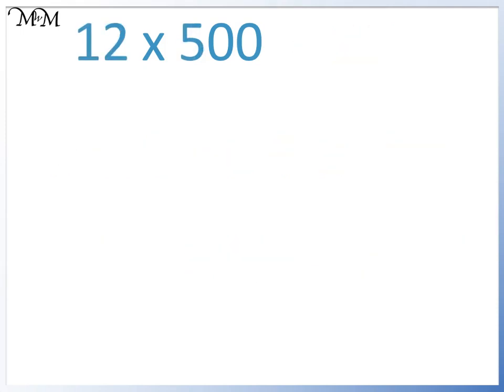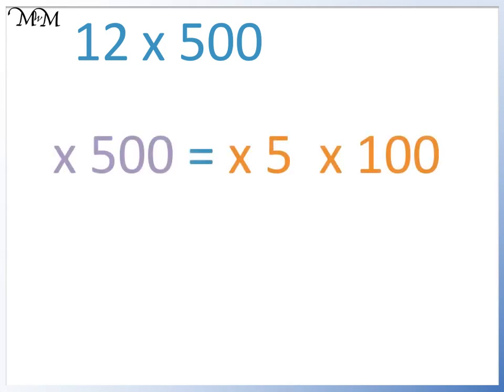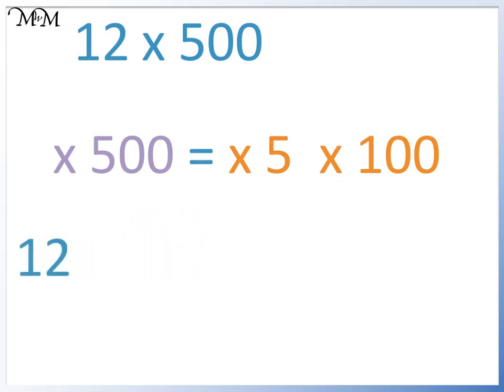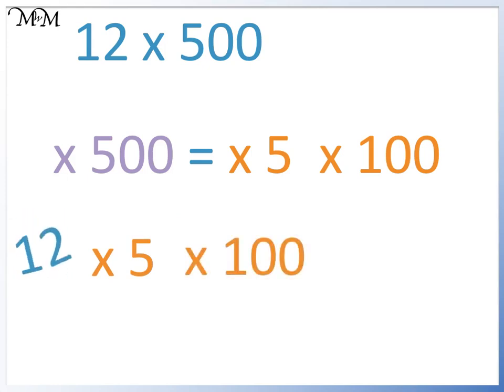Here we have 12 times 500. Multiplying by 500 is the same as multiplying by 5 and then by 100. So we can change 12 times 500 to 12 times 5 times 100. 12 times 5 equals 60.